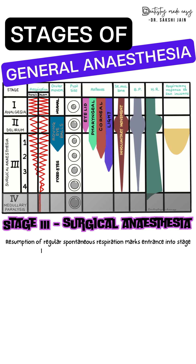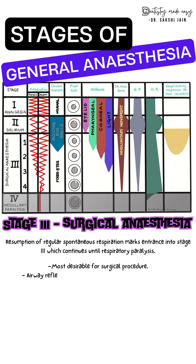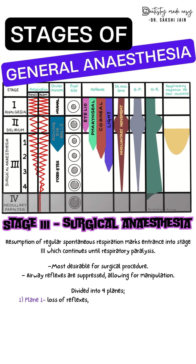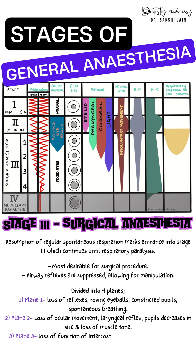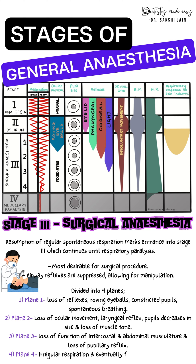Stage 3 is surgical anesthesia. It is the resumption of regular spontaneous respiration which continues until respiratory paralysis. This stage is the most desirable for surgical procedures. Airway reflexes are suppressed, allowing for airway manipulation such as inserting an endotracheal tube.